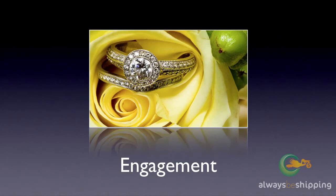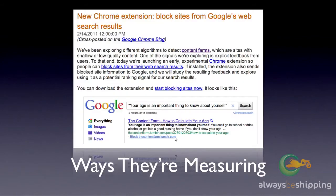So Google is collecting click data — both within their search results, through their toolbar, through the Chrome browser, and even possibly with their analytics package. The extent that the data is used in the algorithm is hugely debated, so we don't need to put on our tinfoil hats yet. But they recently released an extension for Chrome allowing people to block whole domains from ever appearing in their search results again, and Google said they will be studying the resulting feedback and explore using it as a potential ranking signal.